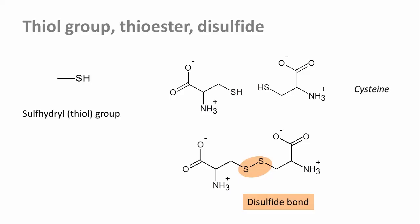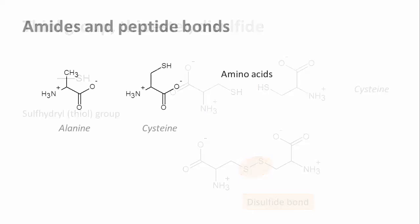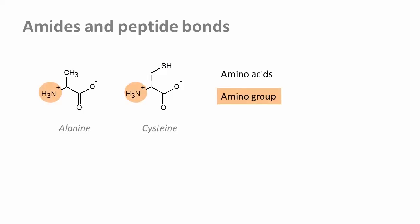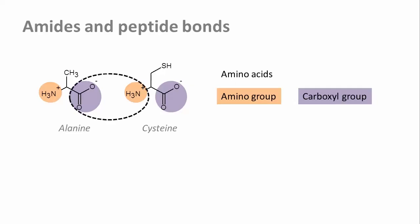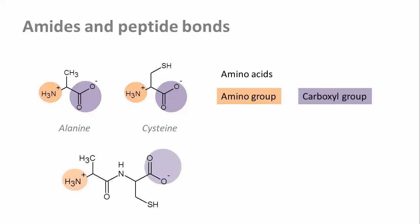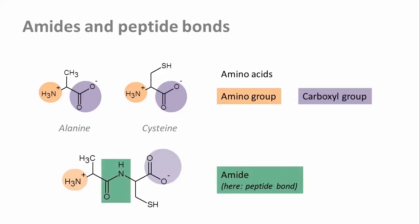Now back to carboxylic acids and the magic things they can do with amino groups. As you've already seen from the previous example, many molecules have more than one functional group. A great example are the amino acids, which all have an amino group and a carboxyl group. To make a polypeptide chain, the carboxyl group of one amino acid and the amino group of the other amino acid are joined up. This link is in general chemistry called an amide bond and specifically, in the context of amino acids forming a peptide, a peptide bond.